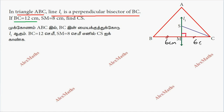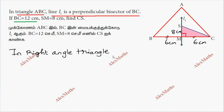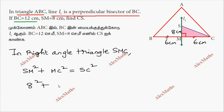SM is 8 cm. So we need to find CS. This is a right angle triangle — triangle SMC. In right angle triangle SMC, we apply the Pythagorean theorem: SM² + MC² = SC². So 8² + 6² gives us 64 + 36.